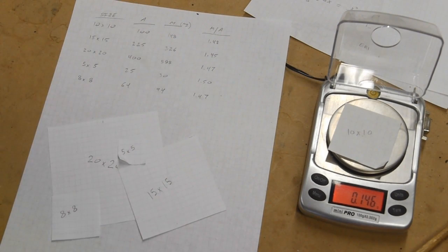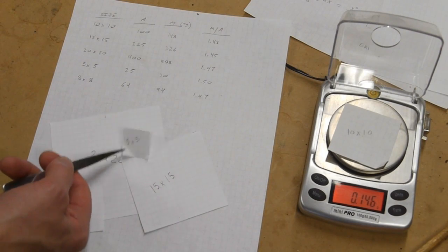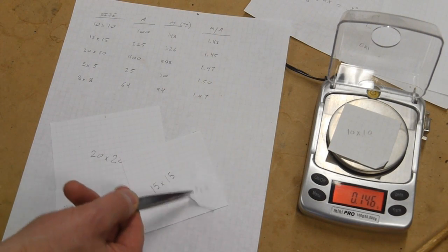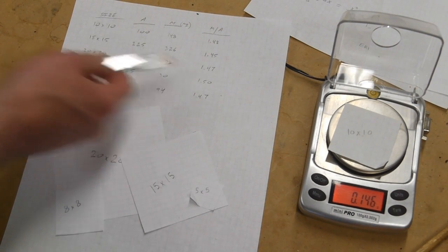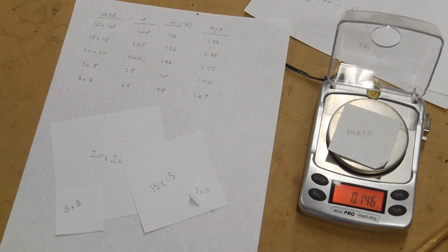In fact, it's surprisingly good. And the smallest piece of paper I had was five by five, which had a mass of 30 milligrams. So even getting all the way down to 30 milligrams, the mass over area number was still pretty good. So this gave me confidence that the whole method was going to work pretty well.